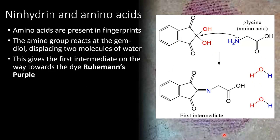The colorless form of ninhydrin is reactive towards the amine groups of amino acids. Amino acids are present in sweat and also on your finger pads, so whenever you touch a surface, amino acids are transferred wherever the ridges make contact. The amine group of amino acids reacts with the gem diol group of ninhydrin, displacing two molecules of water. I've color-coded some of the atoms so you can see where they migrate throughout the reaction. When these two combine, they form this first intermediate, where the amine functional group of the amino acid is present, and two molecules of water have been kicked out. Two molecules combine to give three molecules, so this is thermodynamically favored and a spontaneous reaction.